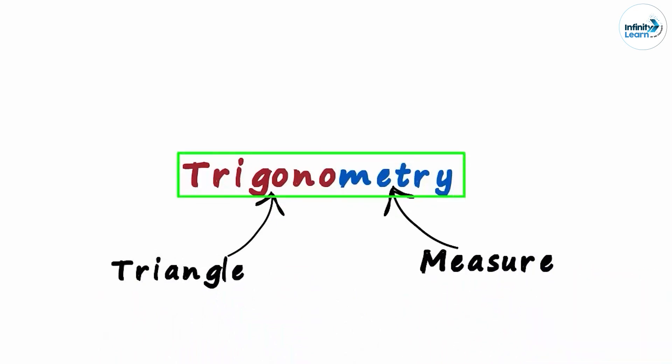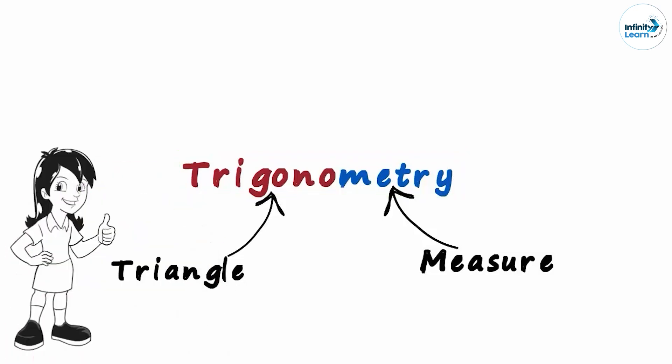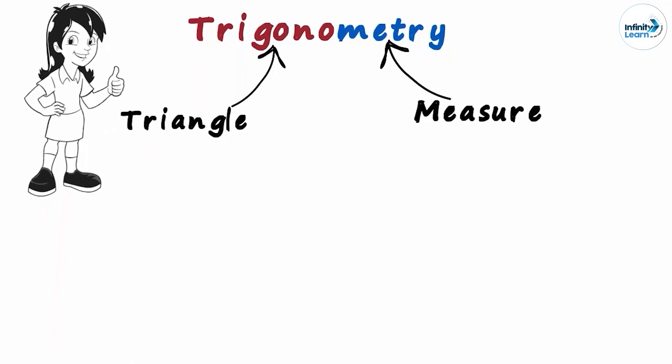Trigonometry is one of the most feared topics in mathematics, but in reality it is extremely simple. The meaning itself is so simple. It's just the measure of all the things possible in a triangle. That's all.